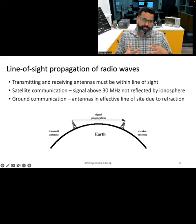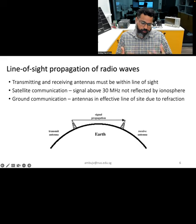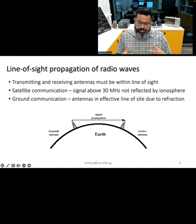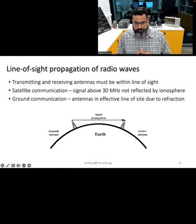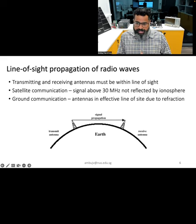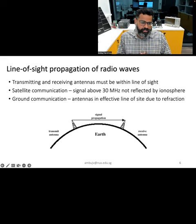Finally, we come to the third propagation mode: line of sight propagation, which is most commonly used for wireless devices we use in our day-to-day life. It occurs when the transmitting and receiving antennas are in direct view of each other. This method works for higher frequencies — it can go up to tens of gigahertz, like millimeter wave communication — and usually has little obstruction for radio waves between the transmitting and receiving antenna.